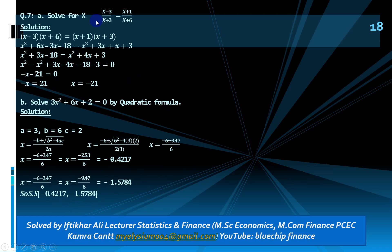Question 7: solve for x. (x − 3)/(x + 3) = (x + 1)/(x + 6). Cross multiply: (x − 3)(x + 6) = (x + 1)(x + 3). Solving gives −x − 21 = 0 on one side, so x = −21. Part (b): 3x² + 6x + 2 = 0. Apply the quadratic formula with a = 3, b = 6, c = 2.